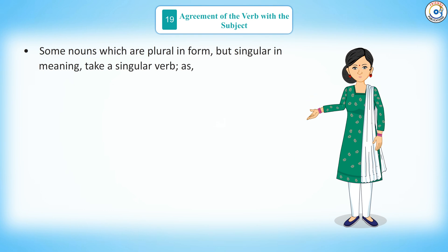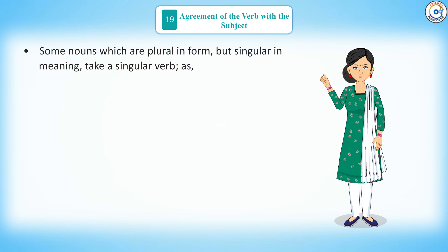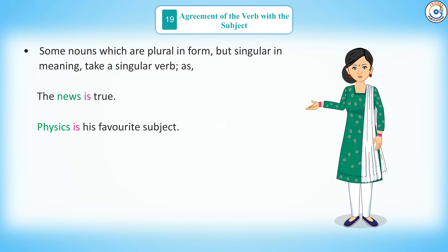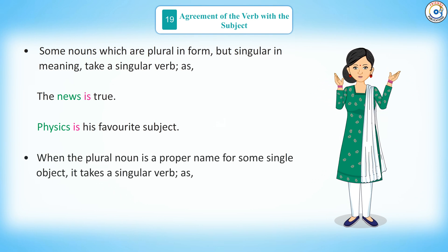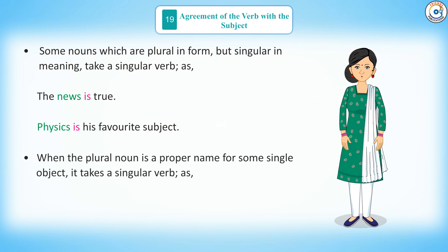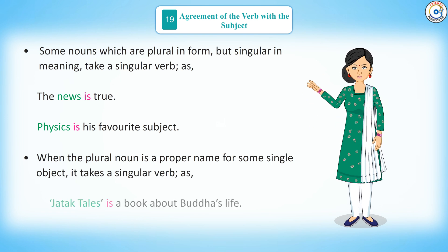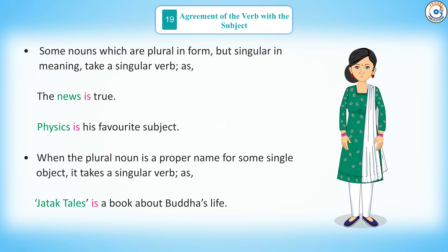Rule 7: some nouns which are plural in form but singular in meaning take a singular verb — as in, the news is true; physics is his favorite subject. When a plural noun is a proper name for a singular object, it also takes a singular verb — as in, Jatak Tales is a book about Buddha's life; Gulliver's Travels was written by Jonathan Swift.